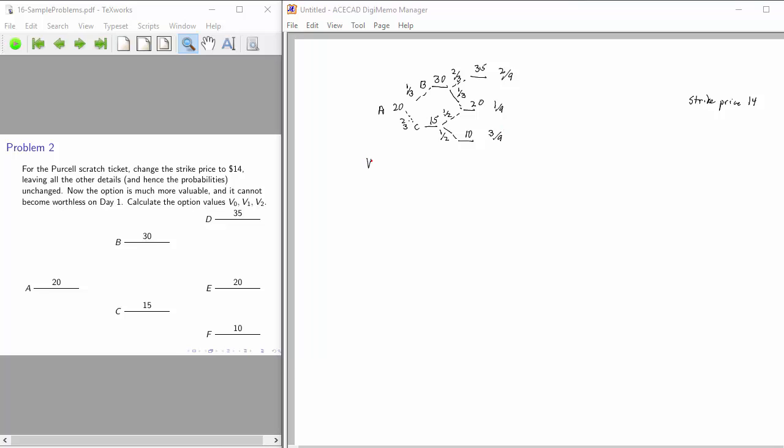Now let's look at the option values on day two. That's easy. The value on day two, if we're at node D, is just the value of the share minus the strike price, or 21. At node E, it's 20 minus 14 or 6. And at F, the option has become worthless.